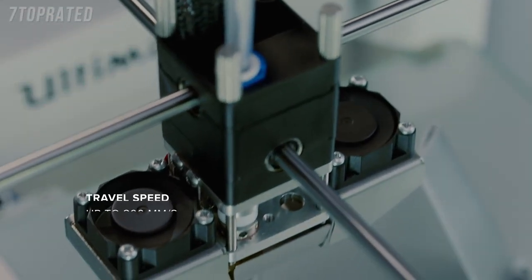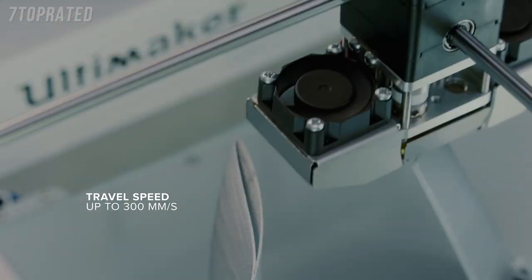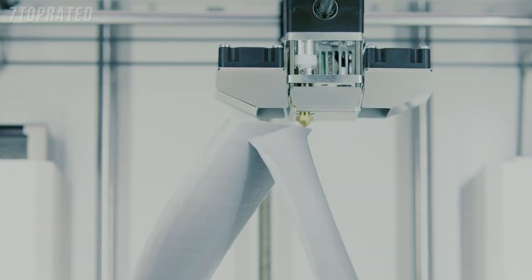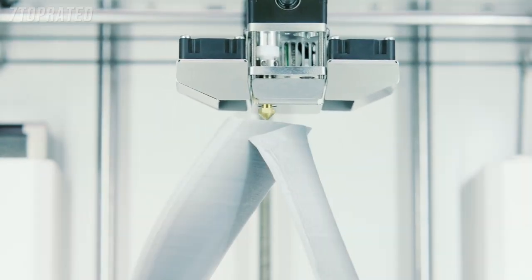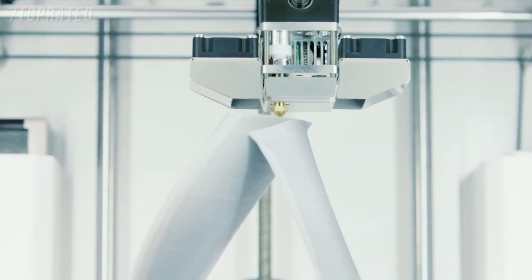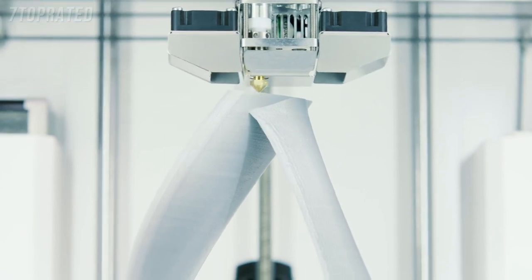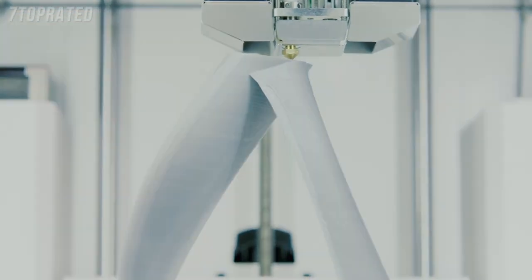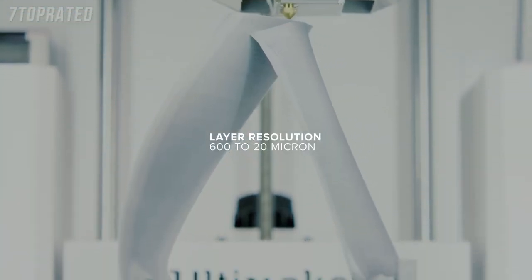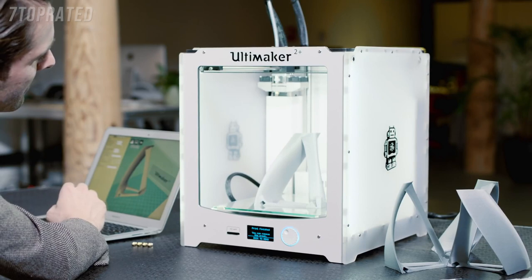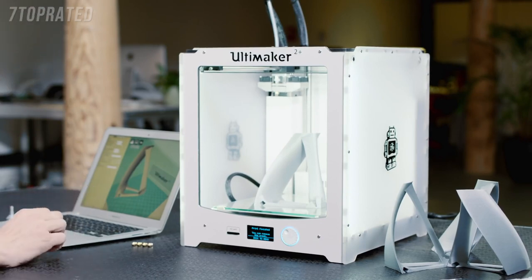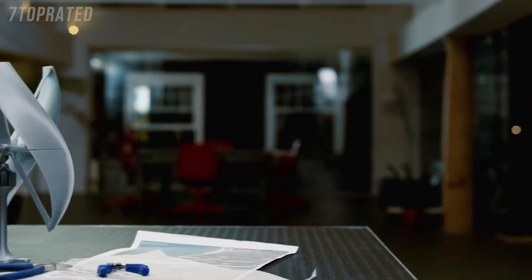Incredibly, the printhead has a travel speed of up to 300 mm per second and a build speed of up to 24 mm per second. But even at such speed, it will reliably and accurately print your models. It has a remarkable layer resolution range, so you can go from 600 microns all the way down to a finely detailed 20 microns. This gives you the freedom to create really fast drafts, detailed prints, and everything in between.